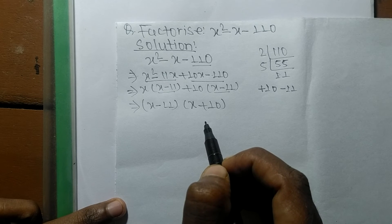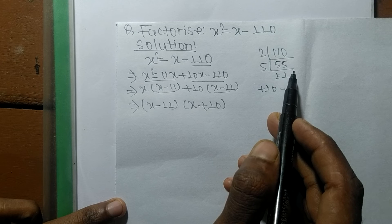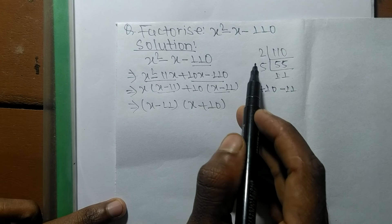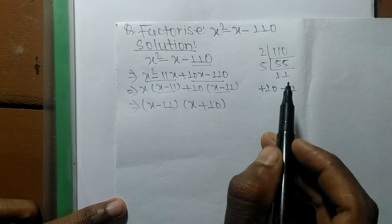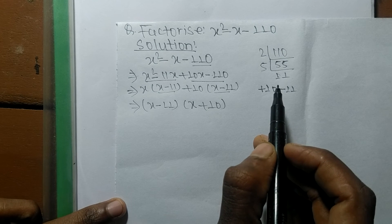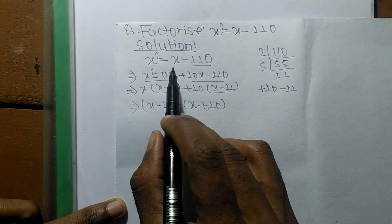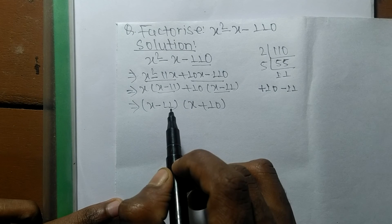In this way we can factorize any such expression. The key steps to remember are: first, find the prime factors of the constant term, then find two numbers whose product equals that constant and whose sum equals the coefficient of the middle term.